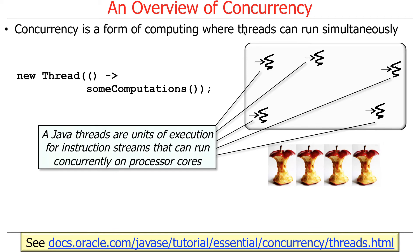Here's how it works under the hood. A thread in Java is a unit of execution for instruction streams that can run concurrently on multiple processor cores. Now, there may only be one core, but even in that case it could still run concurrently by being interleaved — having a thread scheduler let a thread run for a short period of time, suspend it, let something else run, suspend it, bring the other one back, and so on. You can say 'new thread', give it some computation to run, and it will be mapped onto the underlying processor cores.